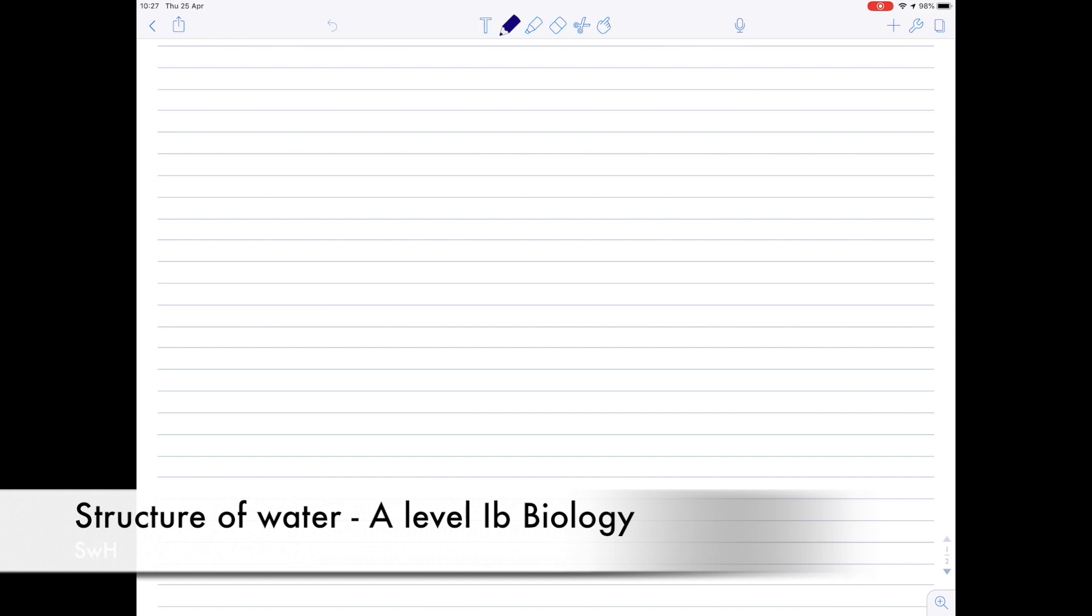In today's A-level IB biology video, we're going to be focusing on water because water is a major component of cells. It's the most abundant liquid on earth and it basically underpins all biology. So we're going to look at its structure, the fact that it has hydrogen bonding, and we're going to look at specific terms such as specific heat capacity, latent heat of vaporization and cohesion tension theory. And then in a separate video, we'll look at the importance of water to living organisms. But this is mainly a chemistry video, really, in a biology format.